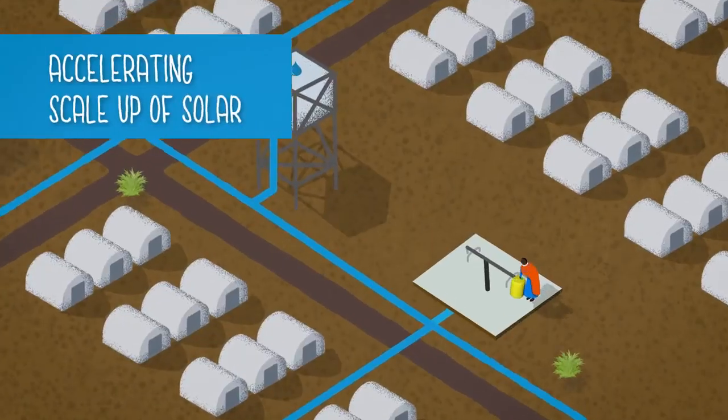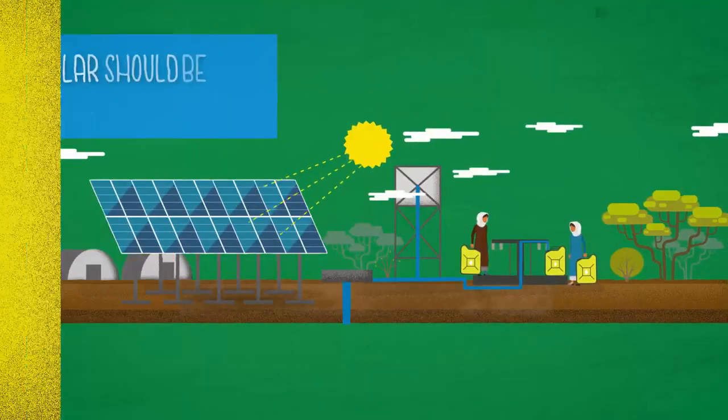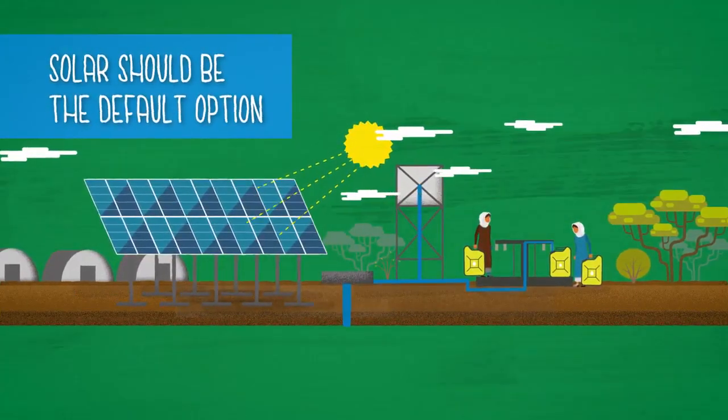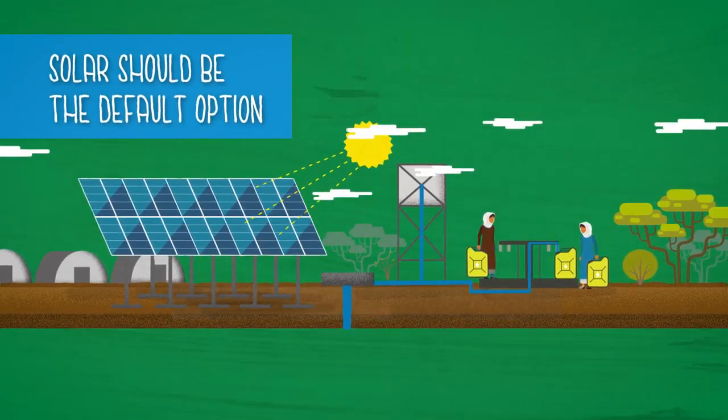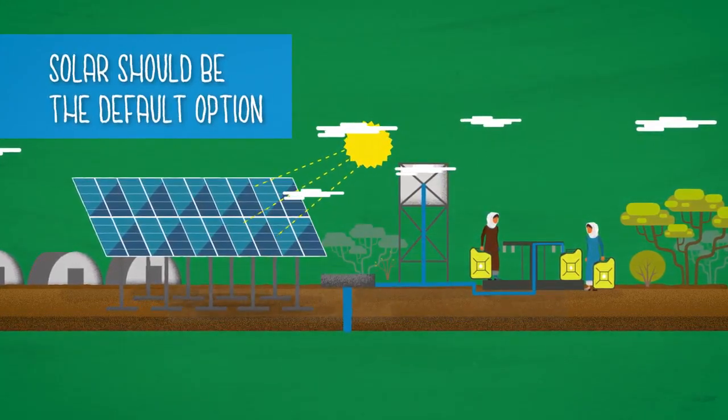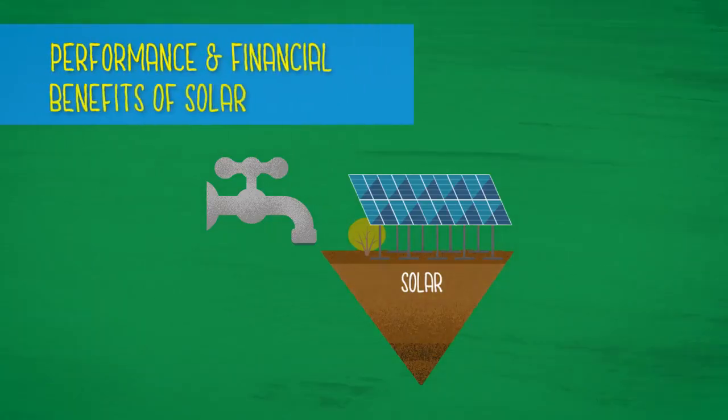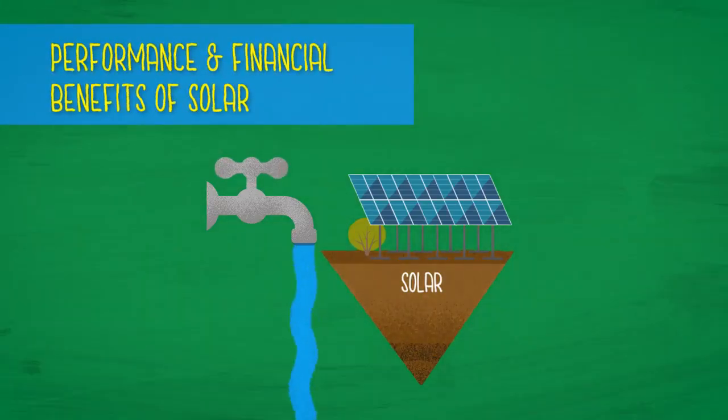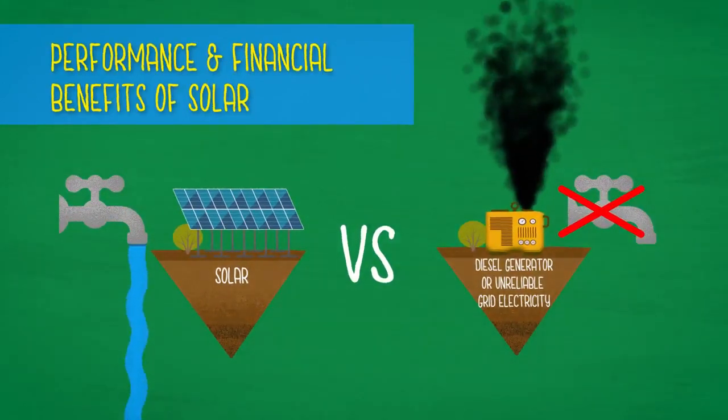The Global Solar Water Initiative would like governments and organisations planning and implementing water supply projects to adopt solar technology as a default first-choice option anywhere where grid electricity is unreliable, while raising awareness among their staff of the performance and financial benefits of solar compared to other power options.